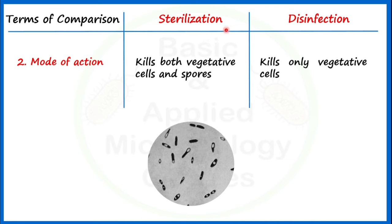On the other hand, if for the same level of contamination we are using disinfection, these vegetative cell forms will be killed. But endospores, or we can say spore form, are not actually removed — we cannot completely get rid of the spores of microorganisms.